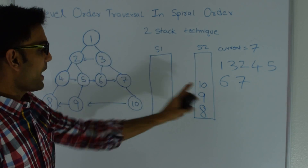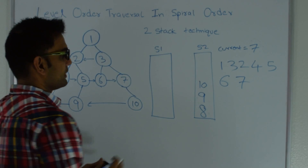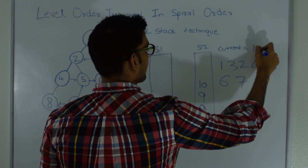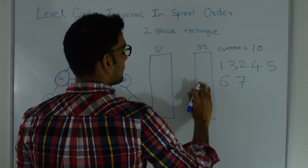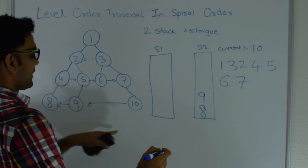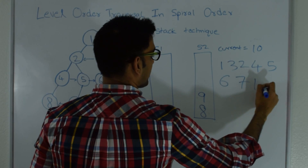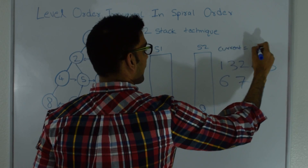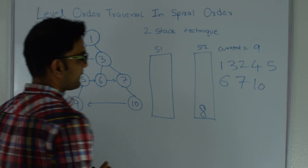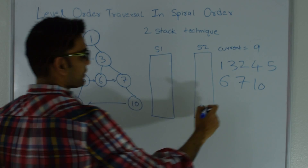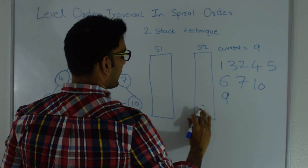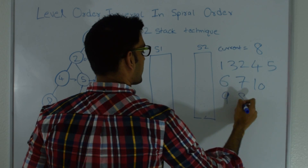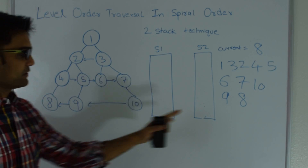Stack 1 is empty so I go back to stack 2 and pop — current becomes 10. 10 does not have left or right child so I just print 10. Then current becomes 9: 9 also has no children, so I print 9. Finally current becomes 8: 8 also has no children, so I print 8.